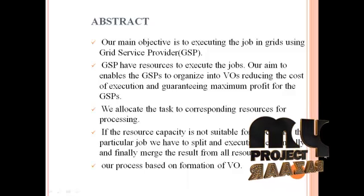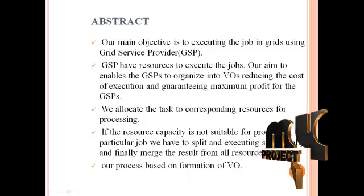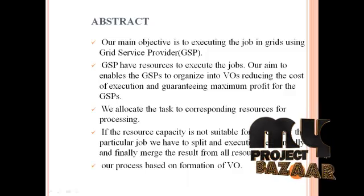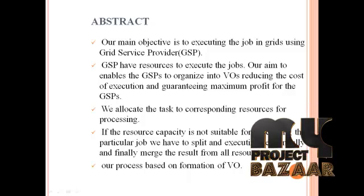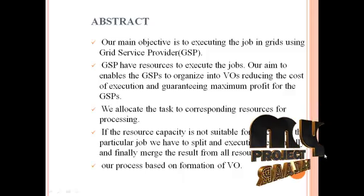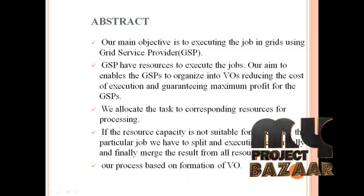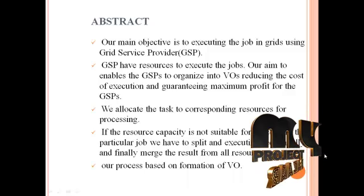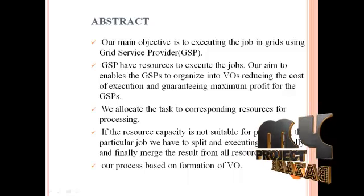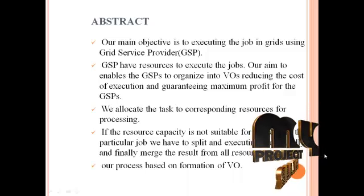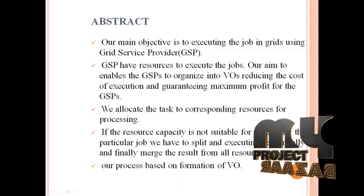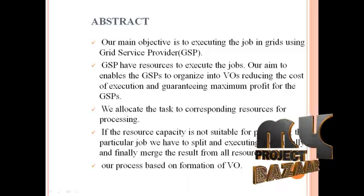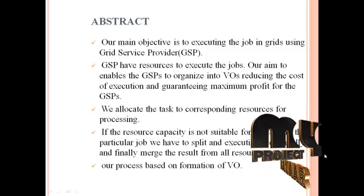In our project, the GSP has three resources: resource 1, resource 2, and resource 3. Each resource has a capacity and a cost for execution. When an incoming job arrives, the GSP analyzes the job and checks whether it can be executed on an available resource. If capacity is available, the GSP allocates the job to that resource. If no single resource has enough capacity, the GSP does not skip the job — instead it splits the job and allocates parts to each resource. The resources execute the split job and return the merged result to the GSP, which then executes with minimum cost and maximum profit.